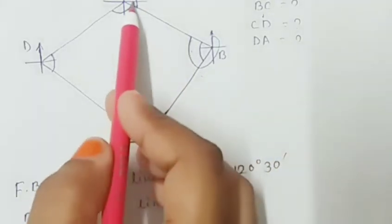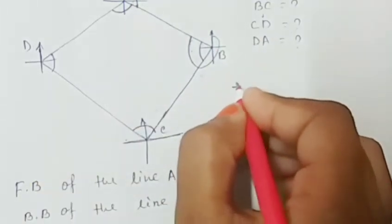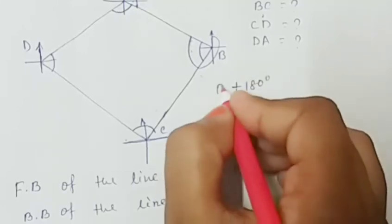If the forebearing is smaller than 180 degrees, we should add 180 degrees to the forebearing.